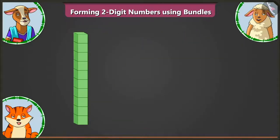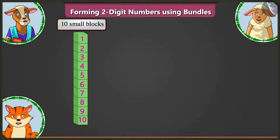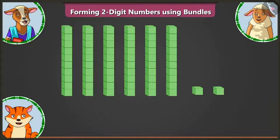Here, in the first big block, there are one, two, three, four, five, six, seven, eight, nine and ten small blocks. Means, there is one tens. Well done, Billy.